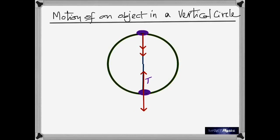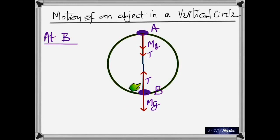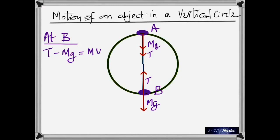When you write the equations, at the lowest point B, the tension and mg are in opposite directions. Therefore, when you take the net force, you take the difference between the two. So tension minus mg equals the centripetal force, which is mv² divided by the radius. In this case, the radius will be the length of the string.